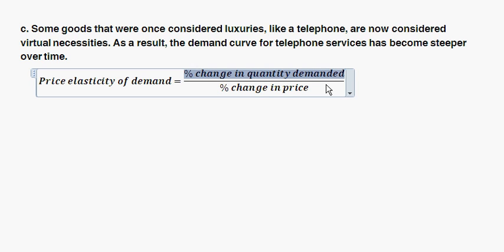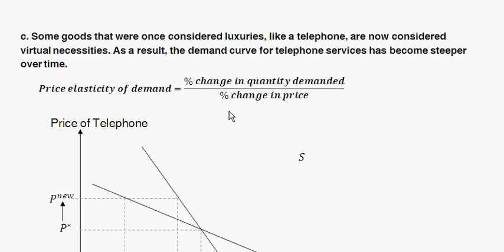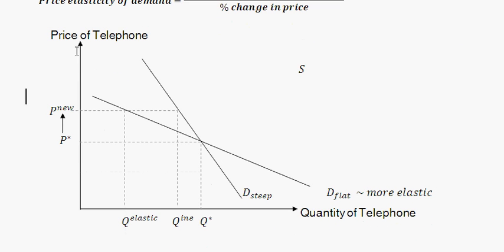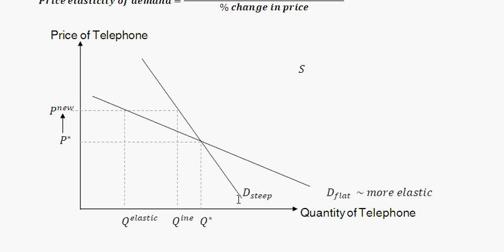Visually, with a demand diagram, it might look something like this. On the vertical axis is the price of telephones, and on the horizontal axis is quantity of telephones. We have two demand curves: a steep one reflecting inelastic demand, and a flat one reflecting more elastic demand. Back a hundred years ago when telephones were luxuries, the demand curve was more elastic — given a price change from P-star to P-new, you had a really big change in quantity demanded. However, as telephones became more of a necessity, the demand curve becomes steeper, or inelastic. Now given the same change in price from P-star to P-new, we have a relatively smaller change in quantity demanded.